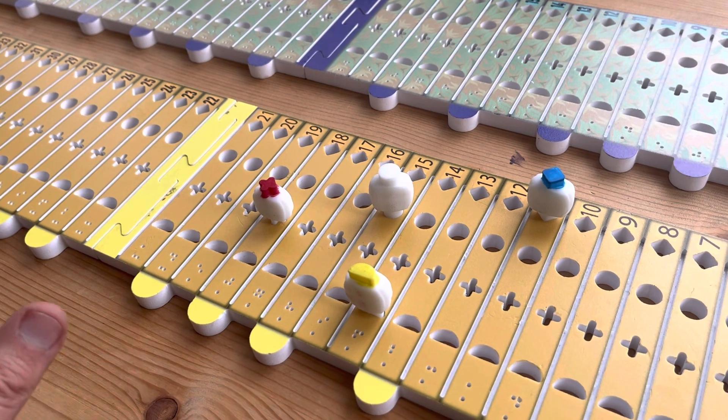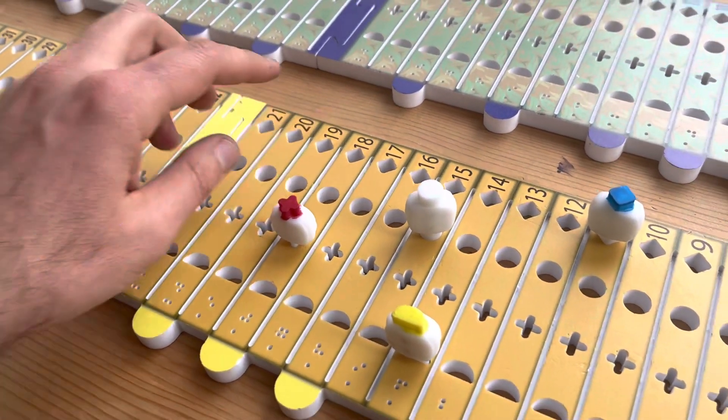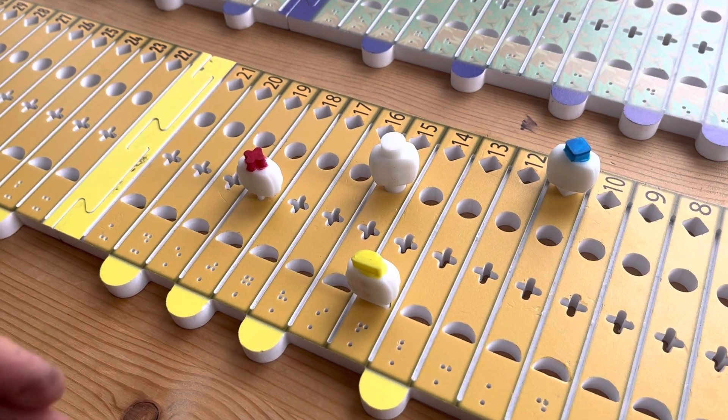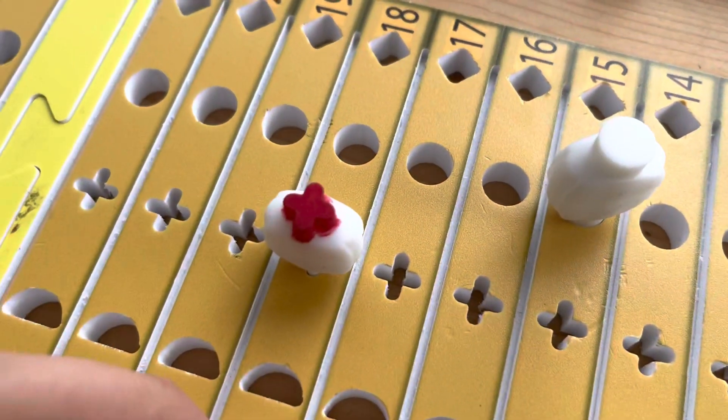And so the opponent can look where you are and understand the spatial position of the game. And this is why we made it in color and also tactile with shapes.